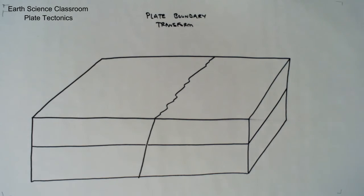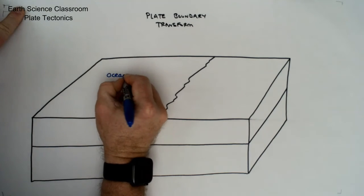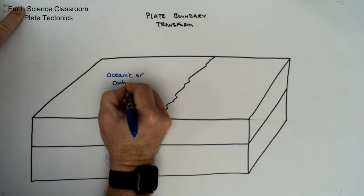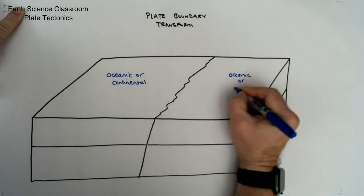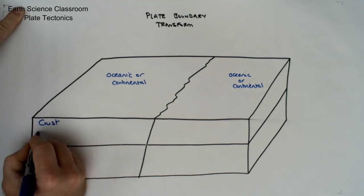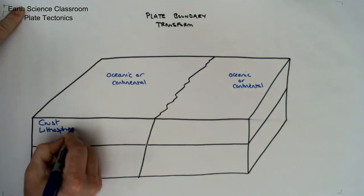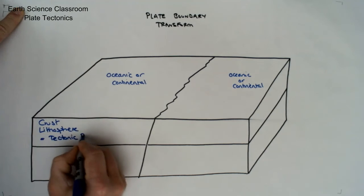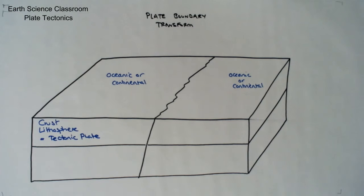As with other boundaries, we have the same layers: the crust and lithosphere, which creates the lithospheric plate, and below it the asthenosphere — our plastic, flowing, hot dense rock layer — which extends down to about 610 kilometers from the Moho. These could be either oceanic or continental plates.